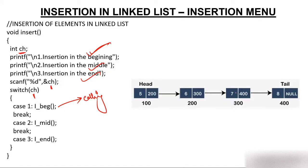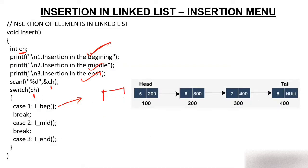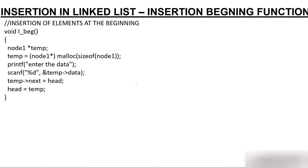We already have a linked list with four nodes. We have to create a new node prior to the current head node — that is, we insert at the beginning. After insertion, the head pointer will move to this new node because the first node is always known as the head node.